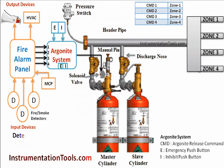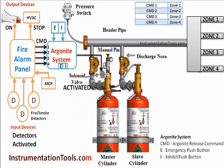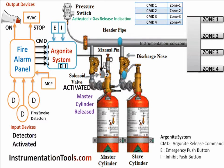Argonite System Operation: When any fire incident happens, fire and smoke detectors will be activated. These detectors give a signal to the fire alarm panel. The fire alarm panel activates the hooter, stops the HVAC unit, and sends an Argonite Release Command to the Argonite System.